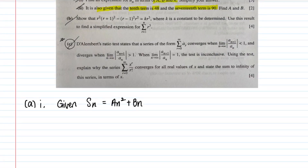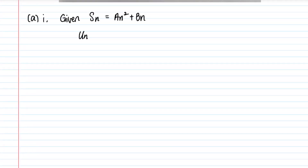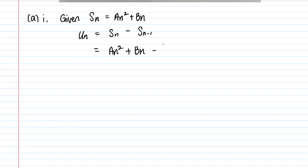Let's start with part a(i). In the question it is given that Sn = an² + bn, and we need to find what un is. Whenever you want to find un, this is a classic summation approach: un = Sn − S(n−1). When you substitute n into your equation, you find that summing up to n leaves only un — everything else cancels. So all you need to do is substitute Sn and S(n−1) in.